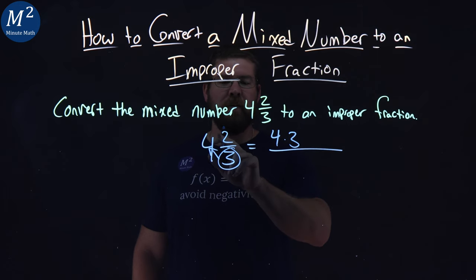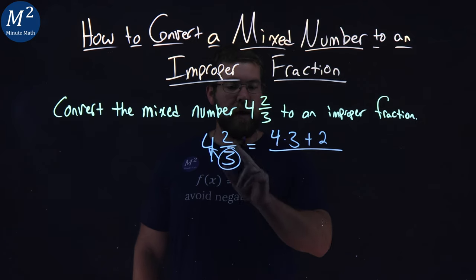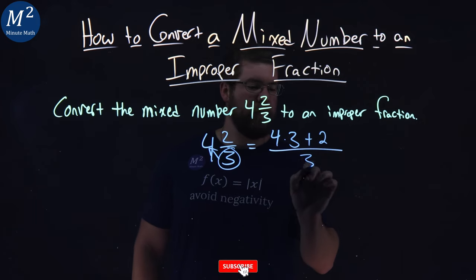So I have four times the three, then we want to add what's in the numerator, which is the two. Keep that all over our denominator, that is three.